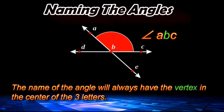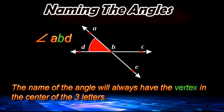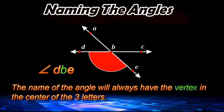This angle right here is angle ABC. This angle here is angle ABD, and this angle is angle DBE. And notice when we named all four angles, we always place the vertex in the middle of the three letters.